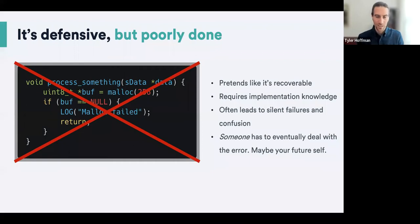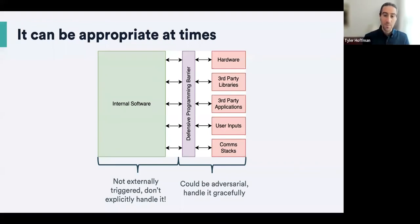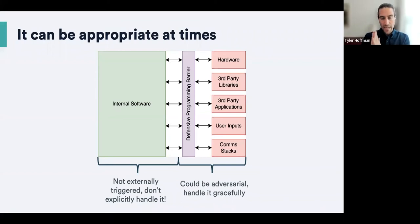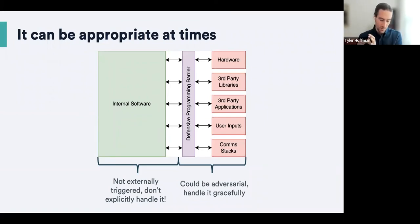Somebody has to eventually deal with these bugs — it may be yourself, but it's probably your co-workers. Defensive programming, when done well, can definitely be appropriate. Anything you cannot control — inputs from the outside world: hardware can be random, third-party libraries, third-party applications — these are code written by vendors that you are not going to debug and are not responsible for. They have updates; you'll pull them into your codebase.